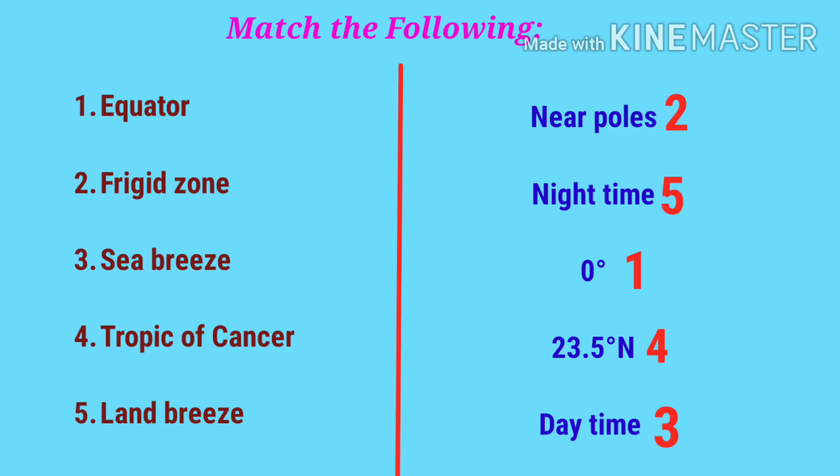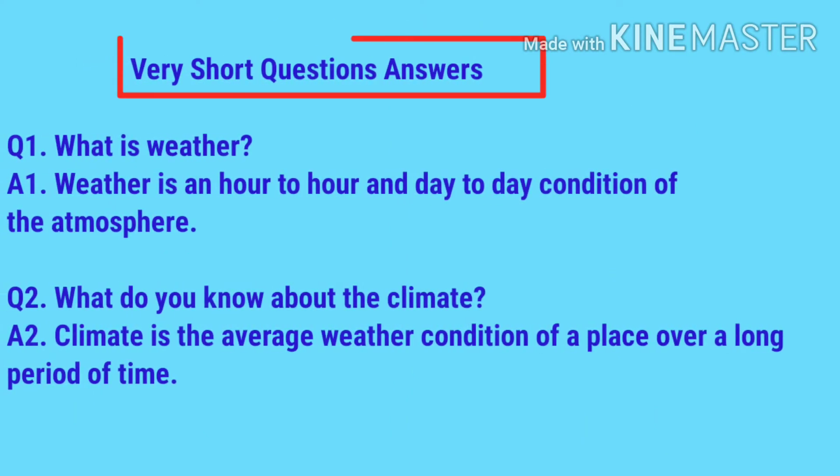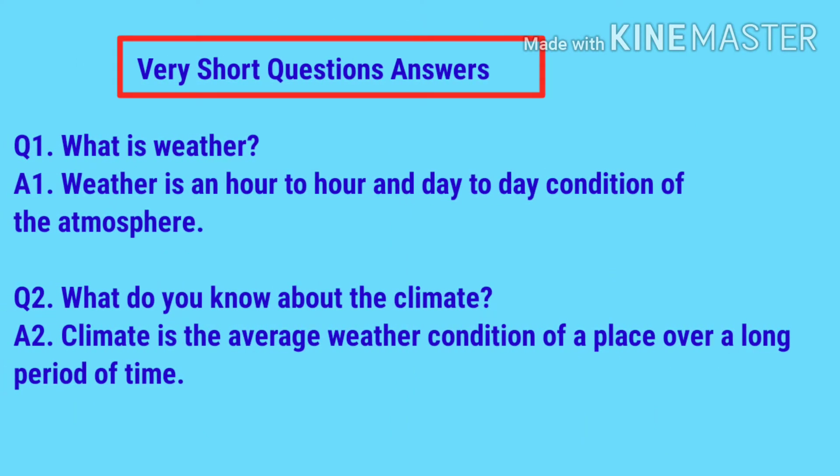Now we'll do textbook question answers. First, very short question answers. Question number one: what is weather? Weather is an hour to hour and day to day condition of the atmosphere.